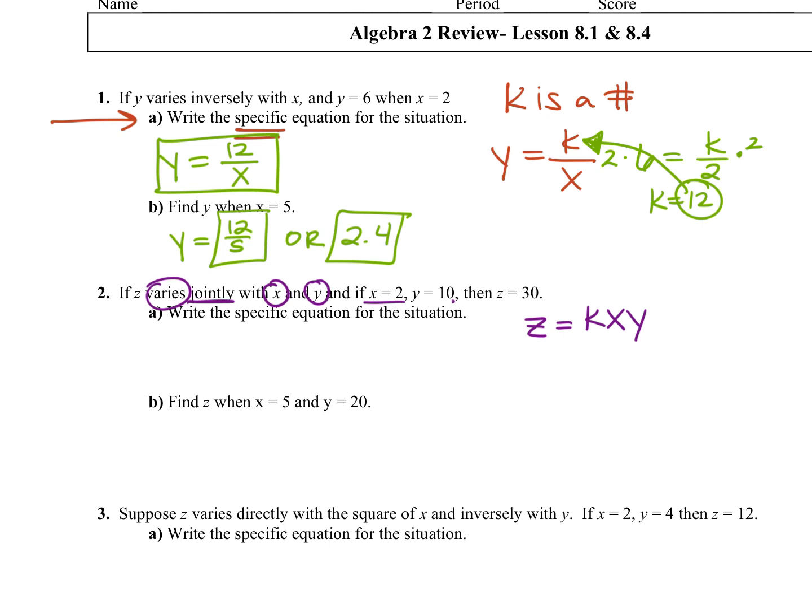It says if x equals 2, y equals 10, and z is 30. So 30 equals k times 2 times 10. What do you do from here? You can divide by 2 and then divide by 10, or this is 20k equals 30. So 30 over 20 or 3 over 2 is your k. So your specific equation is z equals k. So 3 halves times xy. That's your specific equation.